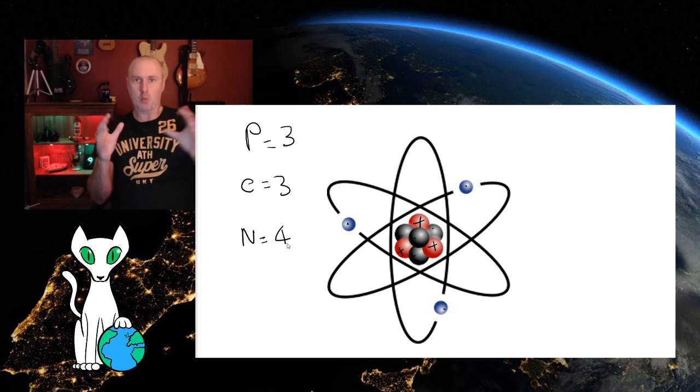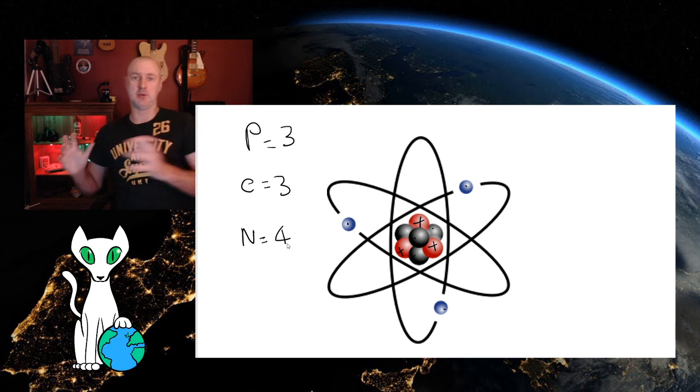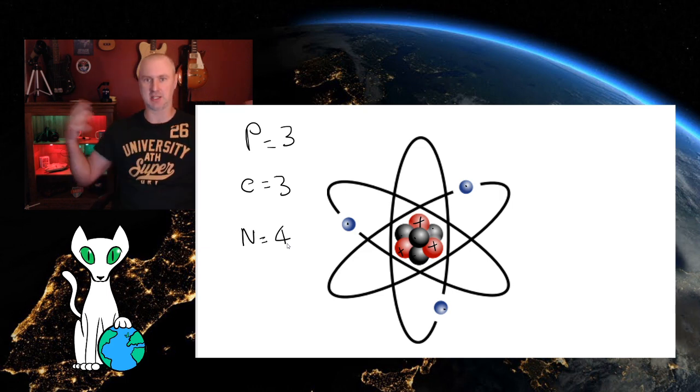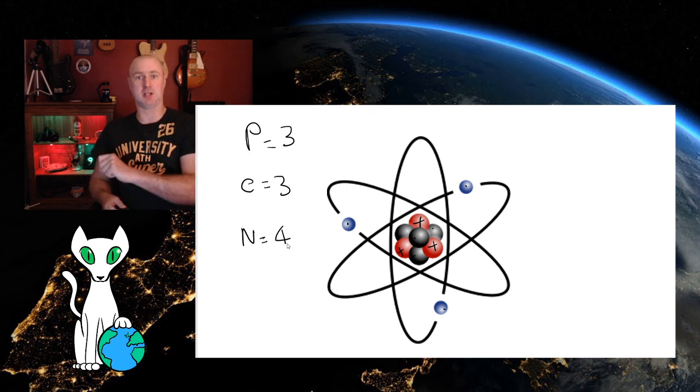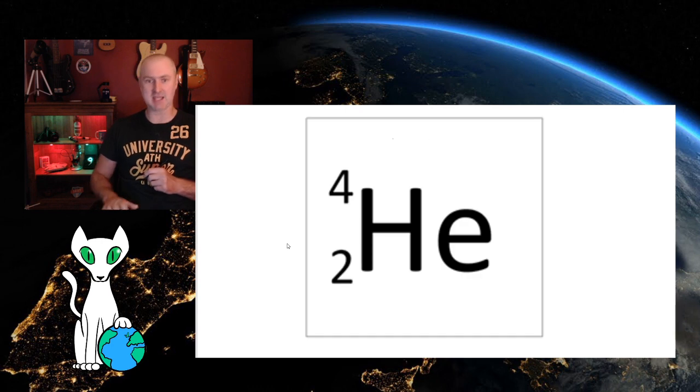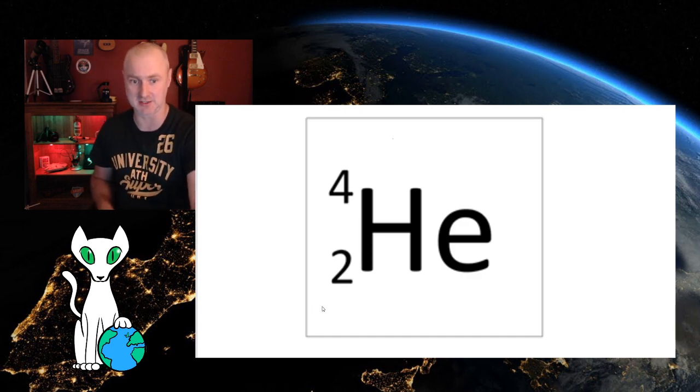Now what makes one element different from another element isn't the fact that the atoms are arranged in a different way. They're not. They all have protons and neutrons in the nucleus and electrons on the outside. But it's the number of protons, neutrons and electrons that changes when we go from one element to a next. And that is what these numbers here, the mass number and atomic number tell us.